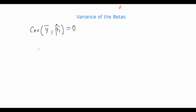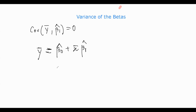Now observe this very important identity. What is ȳ? ȳ is equal to β̂₀ plus x̄ times β̂₁. So observe very carefully — we will use two equalities here. The variance is written in terms of β̂₀.